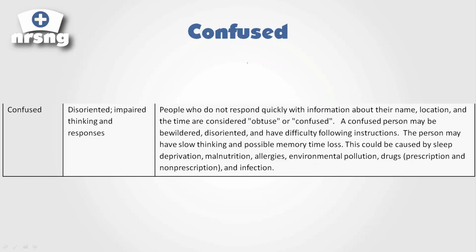Right below that we have confused. People who are confused are going to be disoriented and impaired in their thinking and responses. This would be a patient who may be A and O times one or times two — they may be confused to location or have time loss. This can be caused by sleep deprivation, malnutrition, allergies, environmental pollution, drugs, and infection. In a hospital setting, we're specifically looking for a decrease in consciousness due to neurological pathology — is this due to a stroke, seizure, tumor, or is the patient septic?